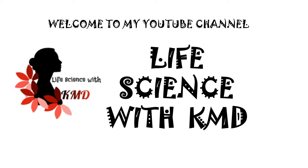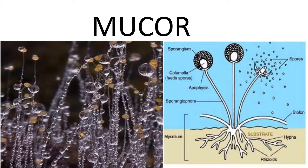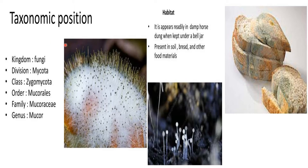Welcome to Life Science with KMD. Today I'm going to explain about Mucor. The taxonomical position of Mucor: it belongs to the class Zygomycota, family Mucoraceae. Its habitat — it appears readily on damp horse dung when kept under a bell jar, and is also present in soil, bread, and other food materials.